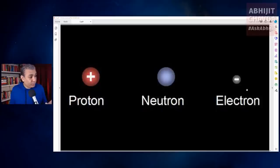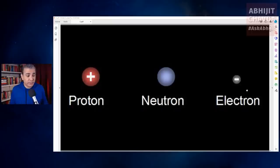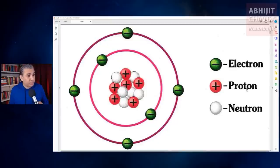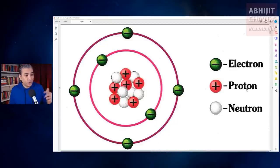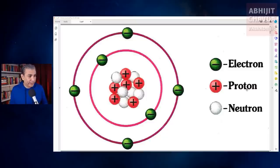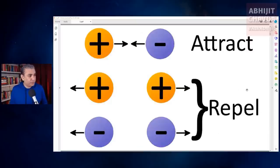Protons, neutrons, and electrons are called subatomic particles. Protons have a positive electric charge, neutrons have no charge, and electrons have a negative electric charge.